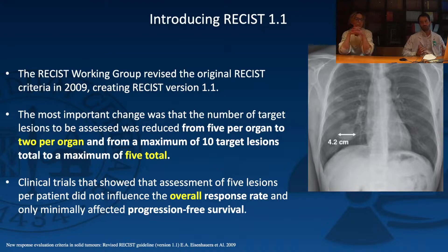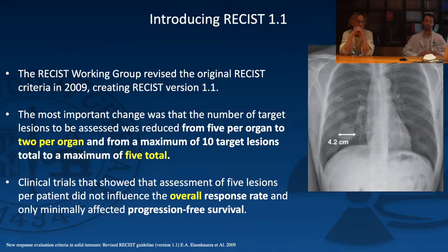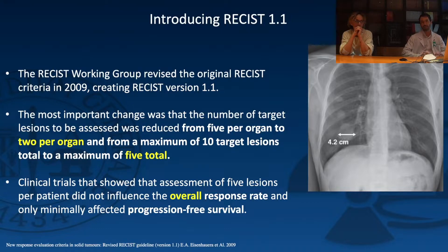We are talking about RECIST 1.1, which is a revised guideline from RECIST 1.0 that came out in the early 2000s. The most important change between RECIST 1.0 and 1.1 is that target lesions in 1.0 were up to 10 lesions with a maximum of 5 per organ. In RECIST 1.1, it was found that decreasing from 10 to 5 lesions — with a maximum of 2 per organ — minimally changed the overall response. So from now on, you choose only 5 target lesions.